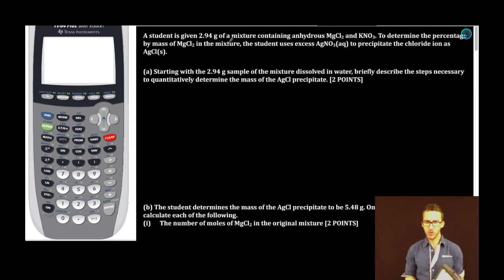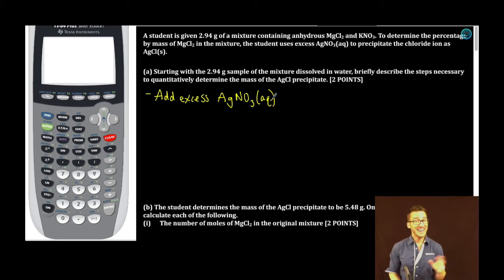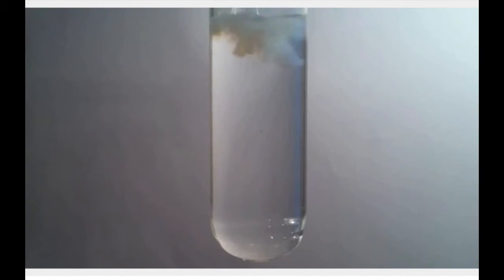Part A. Starting with the 2.94 gram sample of the mixture dissolved in water, briefly describe the steps necessary to quantitatively determine the mass of the silver chloride precipitate. Okay, this is a classic gravimetric analysis question. Something that we will do in the lab, form a precipitate, analyze it. So we've taken this 2.94 gram sample, dissolved it in water, we're adding some silver nitrate to precipitate out the AgCl. Step 1: Add excess AgNO3. We want to add it in excess so that all of the chloride precipitates out to precipitate AgCl.